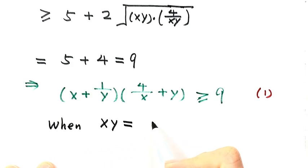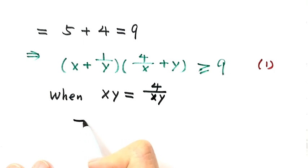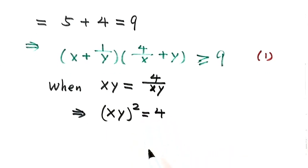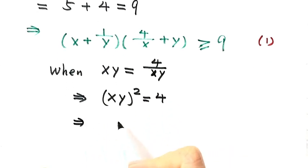xy equals 4 over xy. Then solve this. We have xy squared equals 4. Then both sides take the square root.